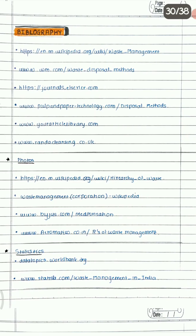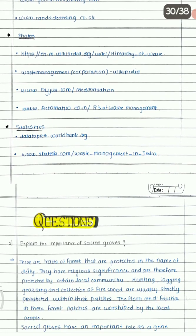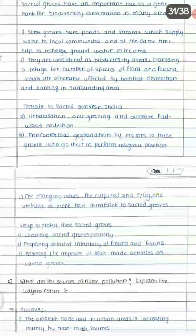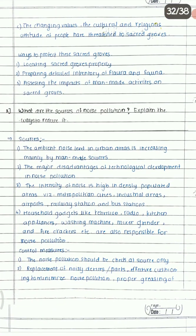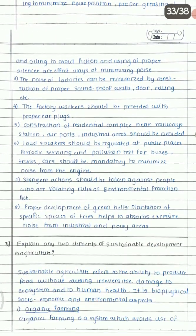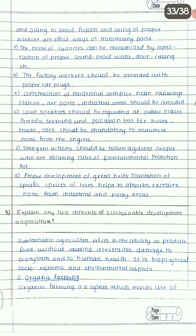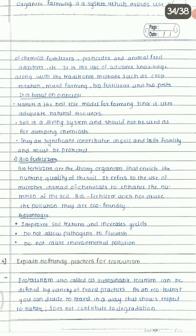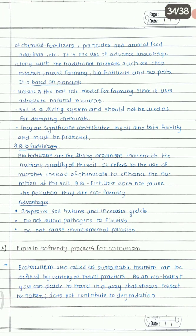The last section is bibliography — from where you gathered the photos, from where you gathered the information — all those details go in the bibliography. Then you can write some questions. These questions are also necessary, but if your teacher says they are not required in your college, you can skip the questions part. So this is all about the EVS project.